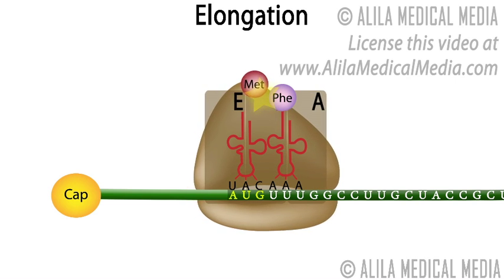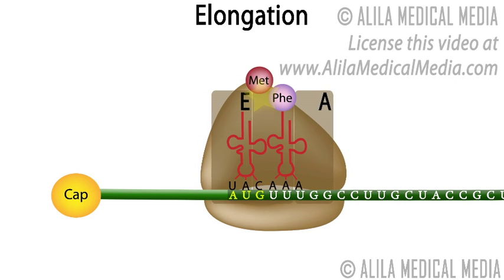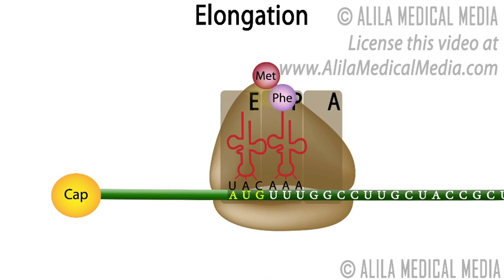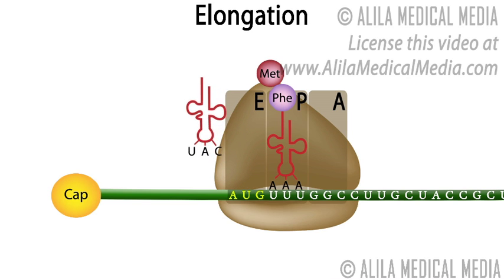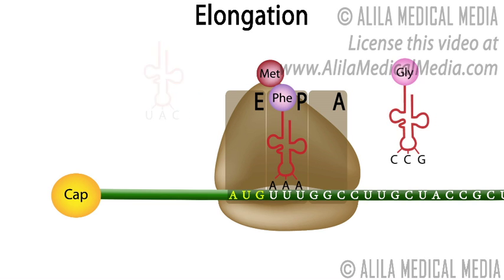At the same time, the ribosome moves one triplet forward on the mRNA. As a result, the empty tRNA is now in the E site and the peptidyl tRNA is in the P site. The A site is now unoccupied and is ready to accept a new tRNA. The cycle is repeated for each codon on the mRNA.